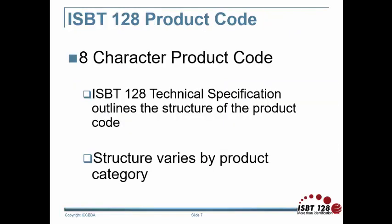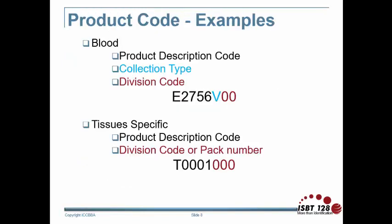Each product code is eight characters long. However, the structure of a product code may vary by product category. The ISBT-128 technical specification outlines the structure of the product code for each product category. For blood, the first five characters identify the product, the sixth indicates the collection type code, and the last two indicate the division code.